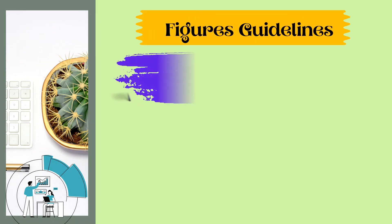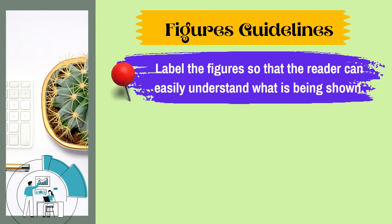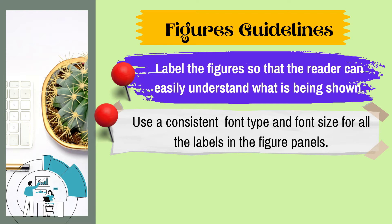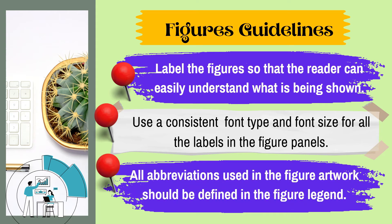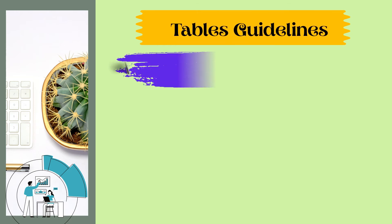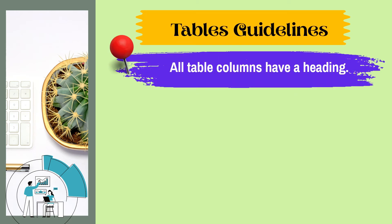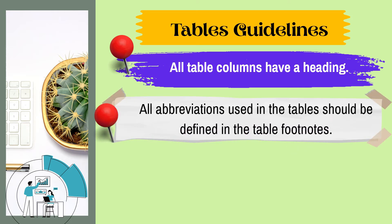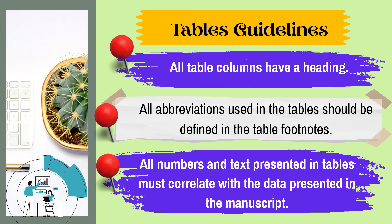For figures specifically: label them so that the reader can easily understand what is being shown; use a consistent font type and size for all labels in the figure panels; and all abbreviations used in the figure artwork should be defined in the figure legend. For tables: all table columns must have headings; all abbreviations used should be defined in the table footnotes; and all numbers and texts presented in tables must correlate with the data presented in the manuscript.